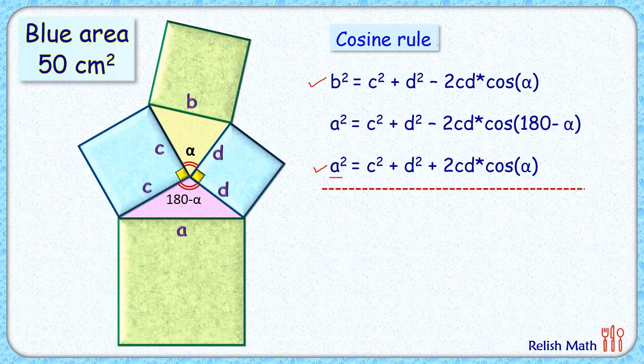The left-hand side will be a squared plus b squared. How about the right-hand side? So the RHS is minus 2cd cos alpha and plus 2cd cos alpha will get cancelled.